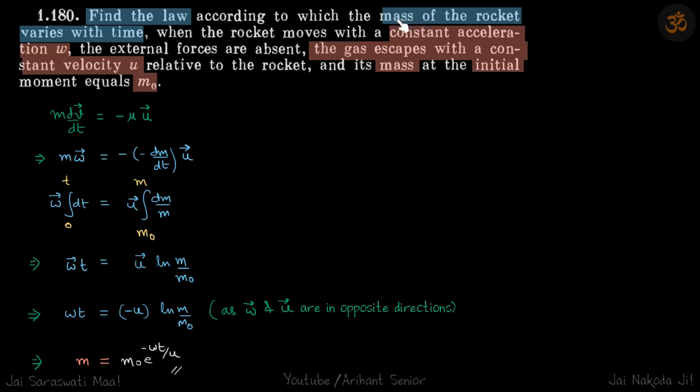For a given rocket we need to find the mass of the rocket as a function of time. It's given that acceleration of the rocket is constant and the gas is escaping with a constant relative velocity u.